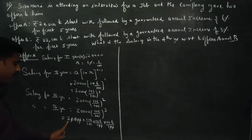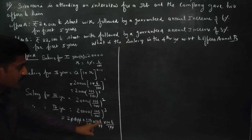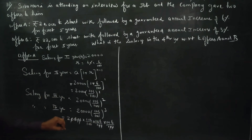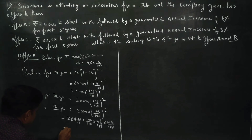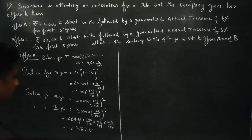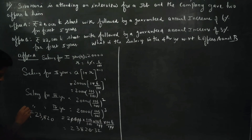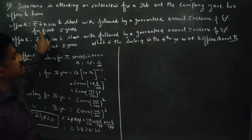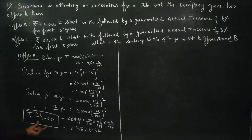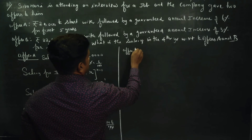Now multiplying it out — 20,000 into (106/100)^3 — dividing gives approximately ₹23,820.32, so rounded off the answer is ₹23,820. That is the fourth year salary for Offer A.